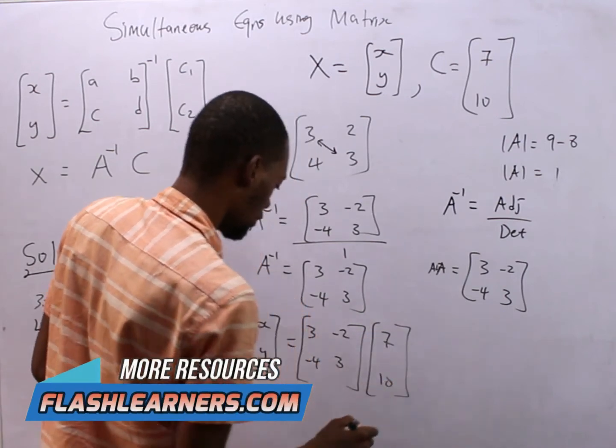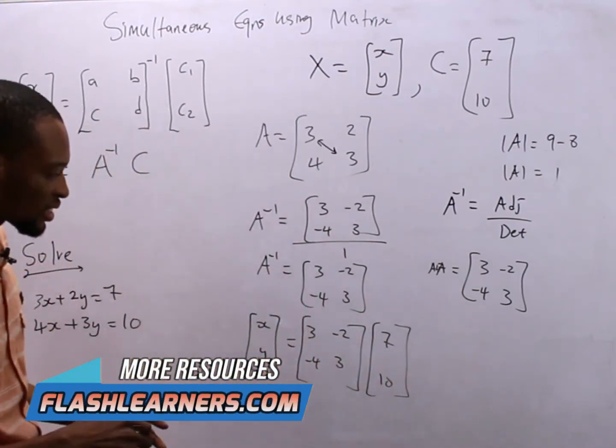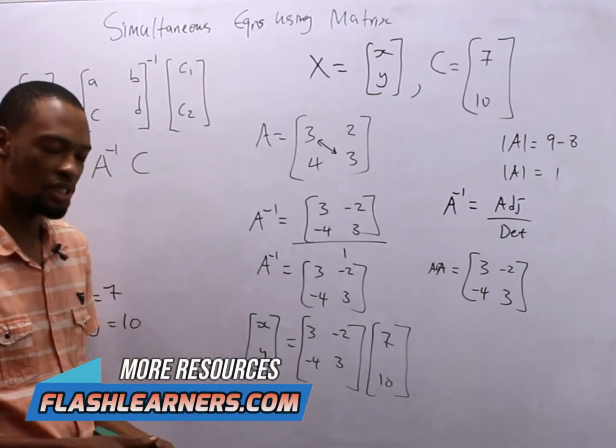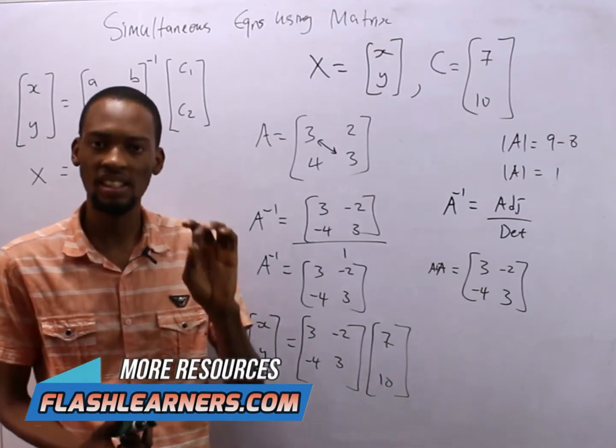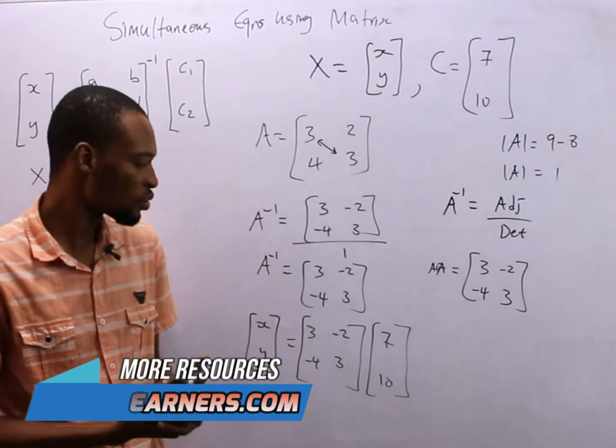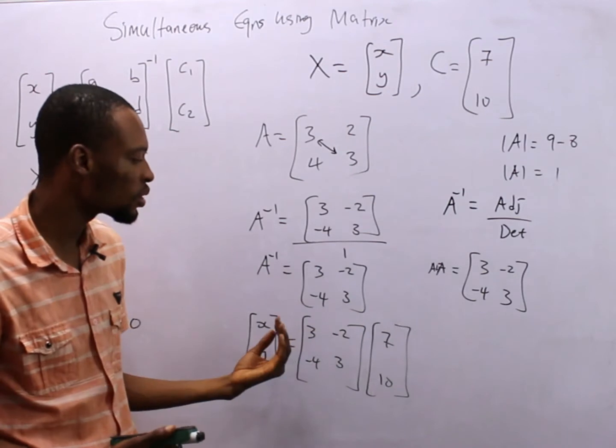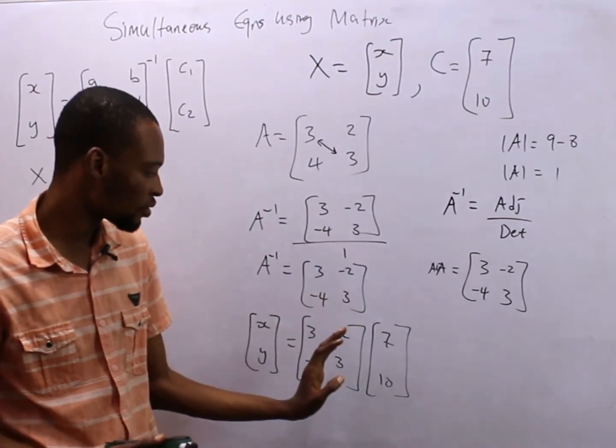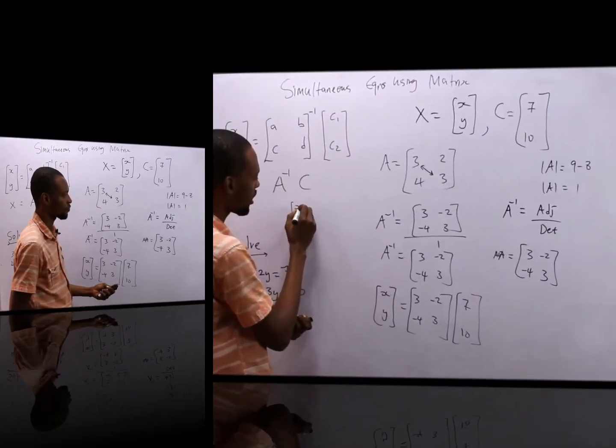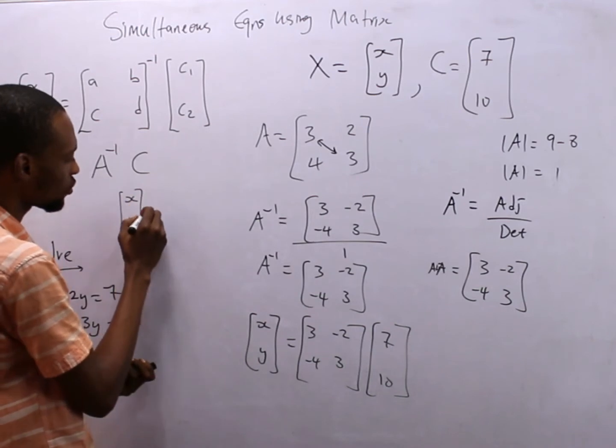What do we do next? We multiply this matrix. And I told you that the law of multiplication states that two matrices can be multiplied if the number of columns in one matrix is equal to the number of rows in the second matrix. So x, y equals...